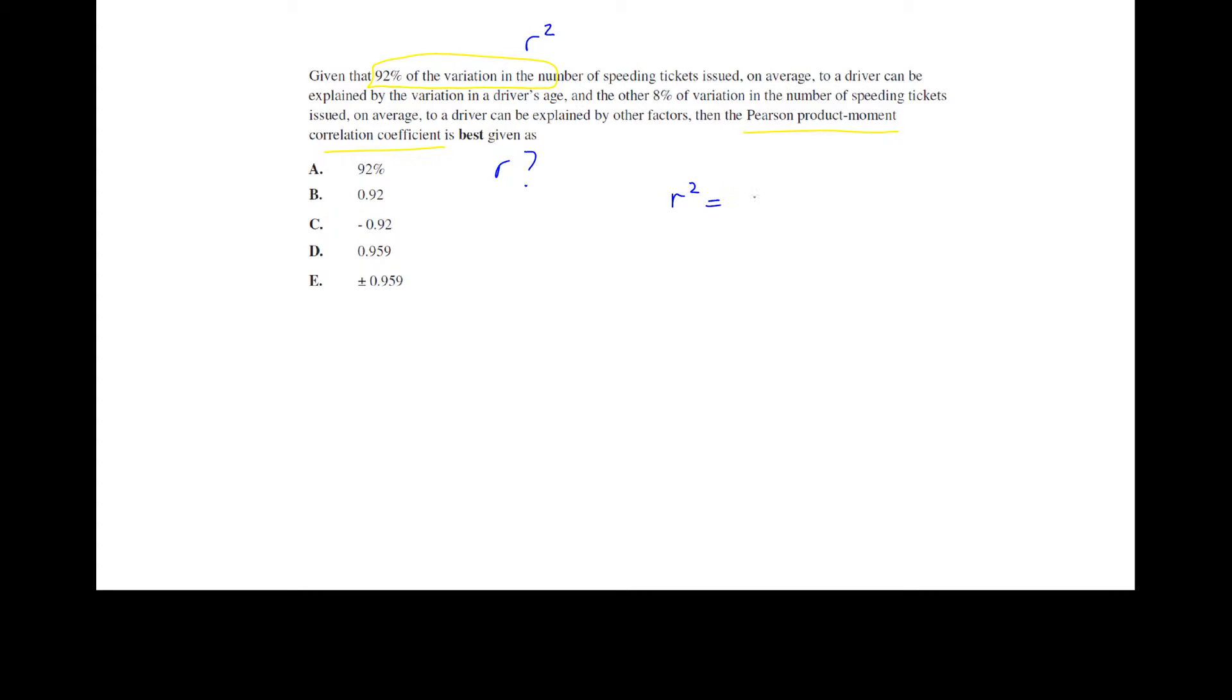So if R squared equals 0.92, then R will equal the square root of 0.92. Now remember, at this stage we don't know whether that is a positive or a negative relationship, so it could be either. So when we find the square root, we end up with 0.959. Now in this case, if it was clearly that it was a positive or a negative relationship, we would then be able to pick the answer there.